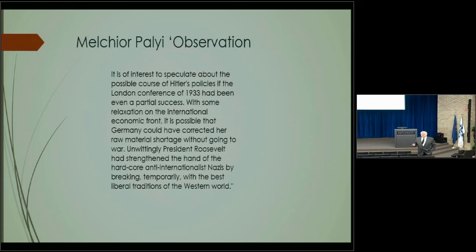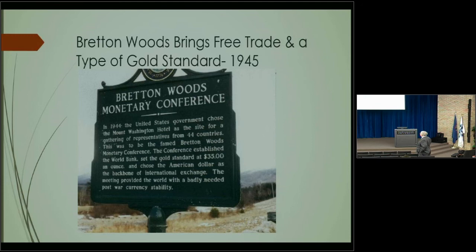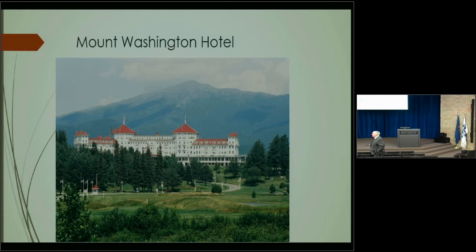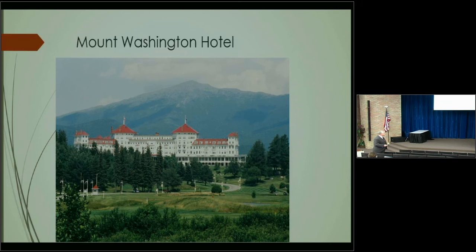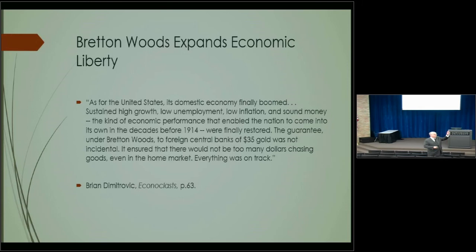When you have a tariff and you don't trade, countries get resources by going to war. Germany and Japan were highly dependent on international trade — the military got in power and had another way of solving economic problems. Now let's go through the successes. The Bretton Woods Conference of 1945 was a tremendous step forward — it allowed the prosperity we live under today. It brought GATT — the General Agreement on Tariffs and Trade — and a modified gold standard.